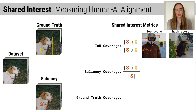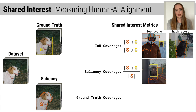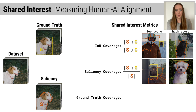Saliency coverage measures the proportion of saliency features that are in the ground truth. Low saliency coverage suggests that few of the features salient to the model are also ground truth features, like in this image where the train tracks are salient as opposed to the train. High saliency coverage indicates that almost all of the saliency features are ground truth, like in this example where the saliency highlights a subset of the dog.